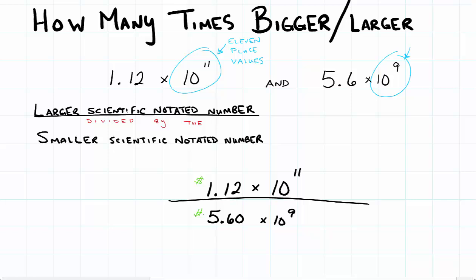Now, these can be a little bit deceptive because $5.60 we know is a larger number than $1.12. But remember, place values tell us how big a number is. And having 11 place values in a number, that's going to be a much bigger number than a number that only has 9 place values added on to it.